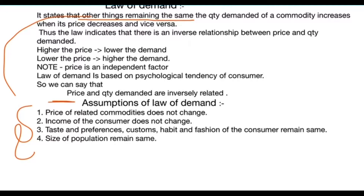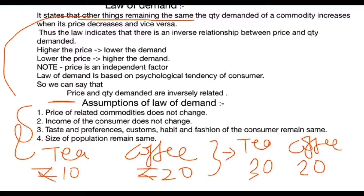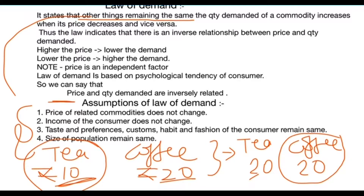If the price of related commodities changes, then the demand will also change. For example, take tea and coffee: if tea is rupees 10 and coffee is rupees 20, and then the price of tea rises to rupees 30 while coffee remains at rupees 20, we will consume coffee instead of tea. But when tea was rupees 10 and coffee rupees 20, we were consuming tea. So the price of related goods must not change.